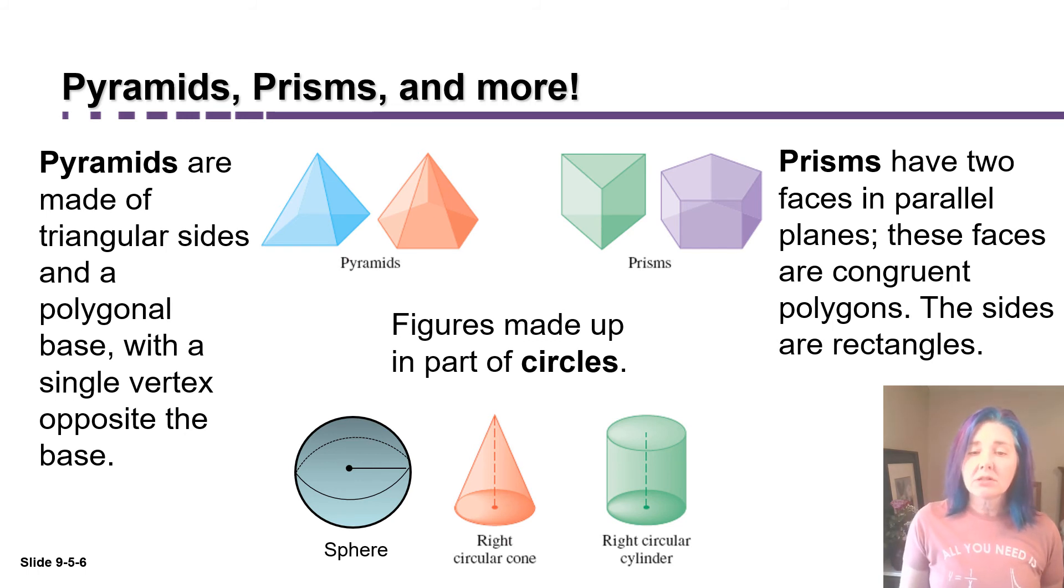We're going to see that there's relationships between pyramids and cones. You see how they come to the point at the top? We're going to be able to use some of the same tricks to find volumes for pyramids as for cones. Similarly, a right circular cylinder isn't technically a prism, but we're going to use some of the same techniques to find the volumes of prisms and right circular cylinders.